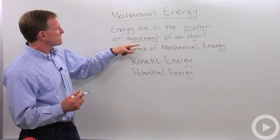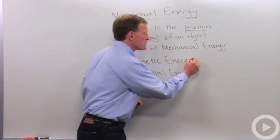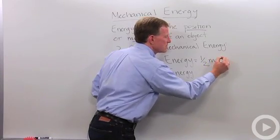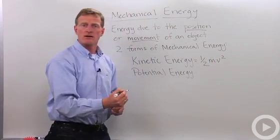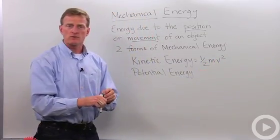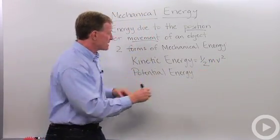So kinetic energy, which is the energy of movement, equals one-half times the mass of the object times its velocity squared. So one-half mv squared is the formula we use for kinetic energy.